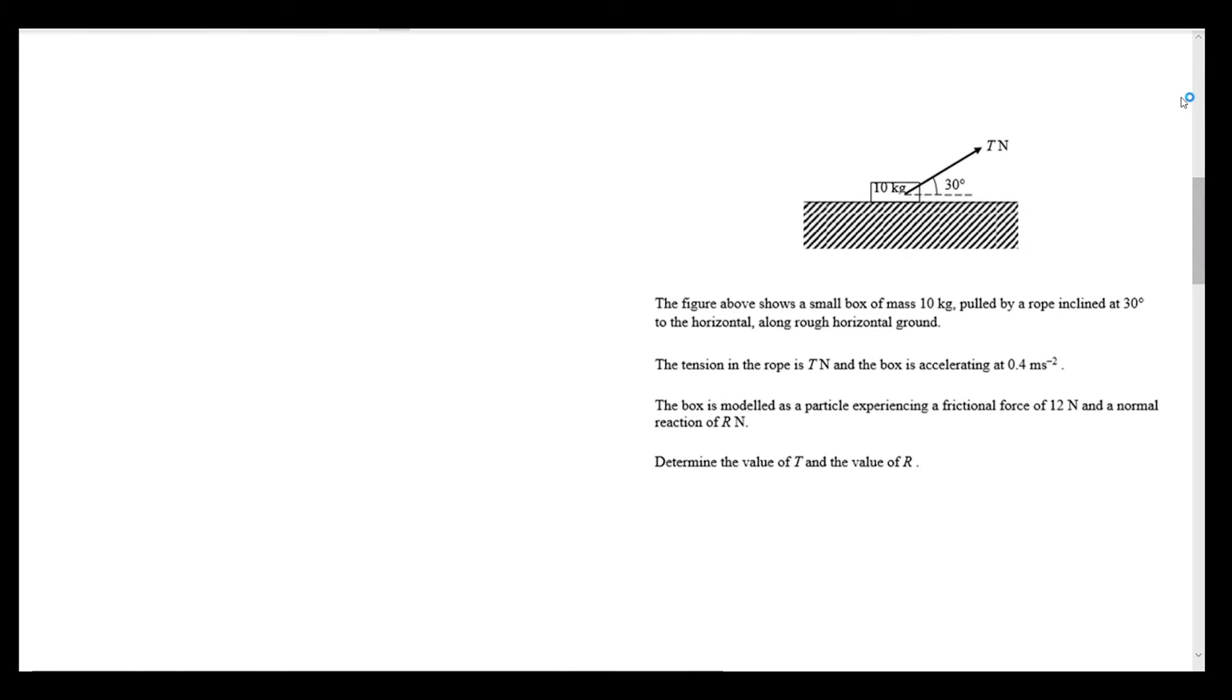In this question, we're told that the figure in the diagram is a small box of mass 10 kilograms being pulled by a rope inclined at 30 degrees to the horizontal along rough horizontal ground. We've been given the diagram, but I'm going to produce my own one so that I can annotate it without any restrictions.